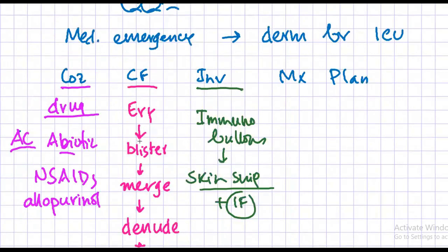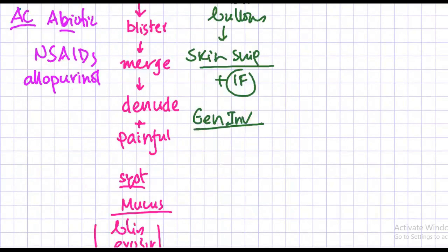In the skin snip, we will also do immunofluorescence to evaluate for any immunobullous disease. Usually, we have to do other general investigations to assess the condition of the patient, such as complete blood count with ESR, RBS, liver function test, renal function test, etc. Those are needed for your management purpose.